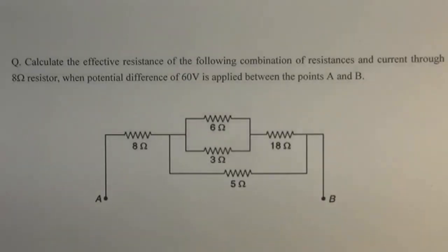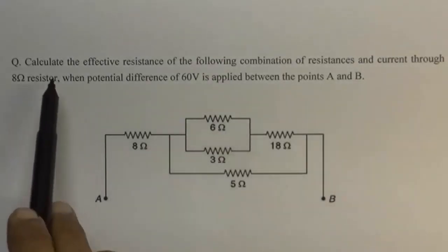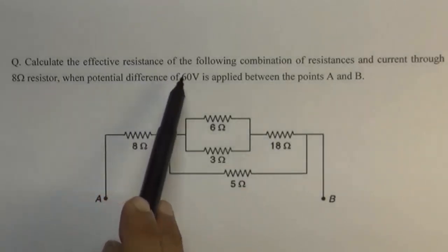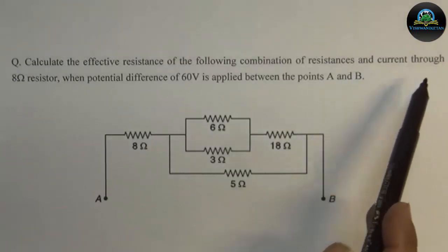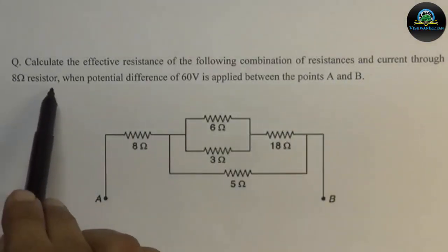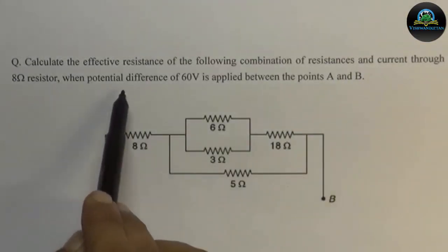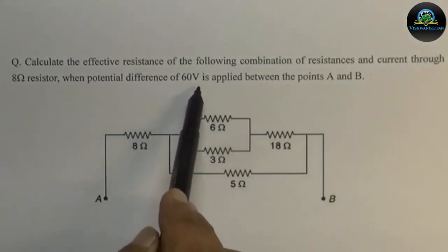Hello students, today we will solve a problem based on calculation of effective resistance. The statement of the problem is: calculate the effective resistance of the following combination of resistances and current through the 8 ohm resistor when a potential difference of 60 volts is applied between points A and B.